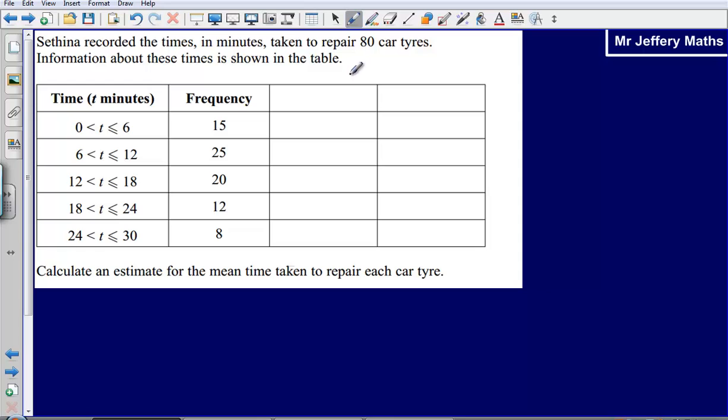So let's take a look at where the information has been grouped into categories. Now straight away you should see that in order to calculate the mean, we've got a problem. Our problem is that we don't have a single value here for, in this case, the time.